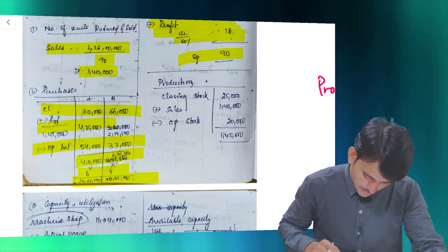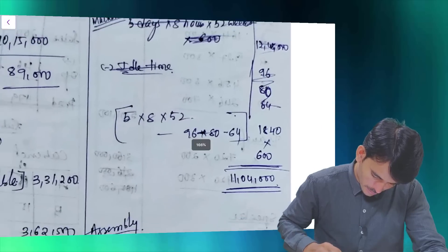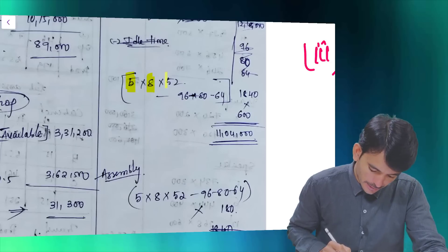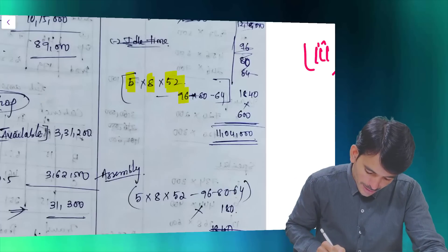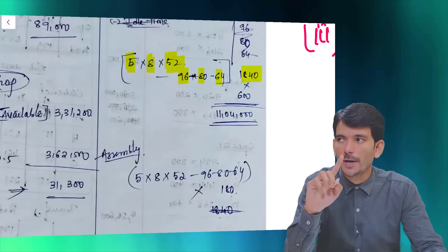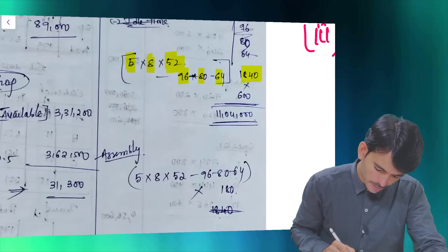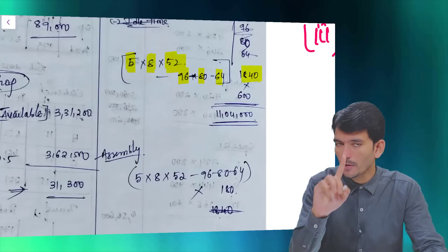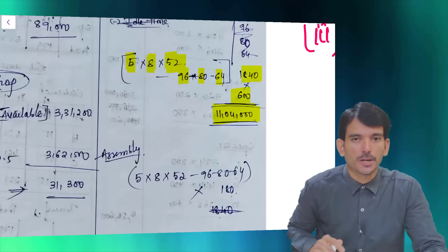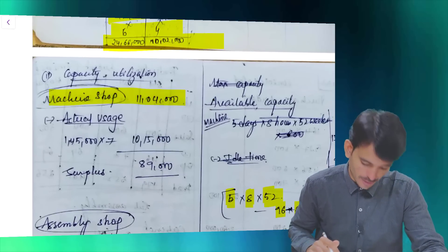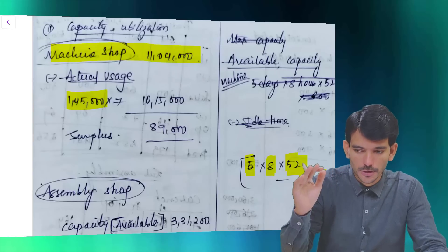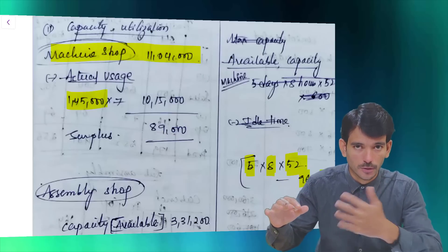For purchases in rupees - first calculate the quantity to purchase using the same formula: closing stock plus issues minus opening stock. Multiply the quantity by the rate per unit to get rupees. For capacity utilization: one employee works 5 days × 8 hours × 52 weeks, then deduct all normal idle time to get effective hours per employee. Multiply by number of employees to get total available hours in the department. Compare with required hours for production to give the utilization percentage and comment.